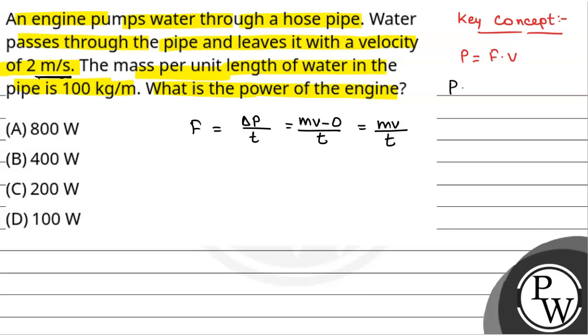So, power P will be equal to mv by t into v, that is equal to mv squared by t. This is the power P and this small p is for momentum.